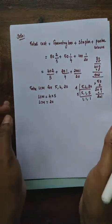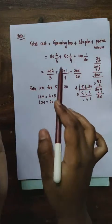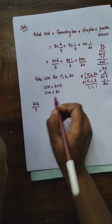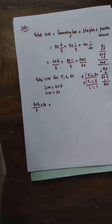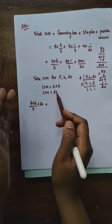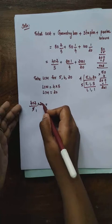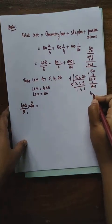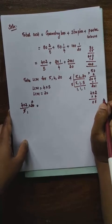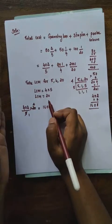We are going to change all denominators to 20. For the first term 402/5: multiply by LCM 20. In the 5 table, 4×5 is 20, so we multiply 402 by 4. 402 × 4 = 1608. So the numerator is 1608 and denominator is 20. For the second term 201/4: multiply by LCM 20. In the 4 table, 5×4 is 20, so multiply 201 by 5. 201 × 5 = 1005.